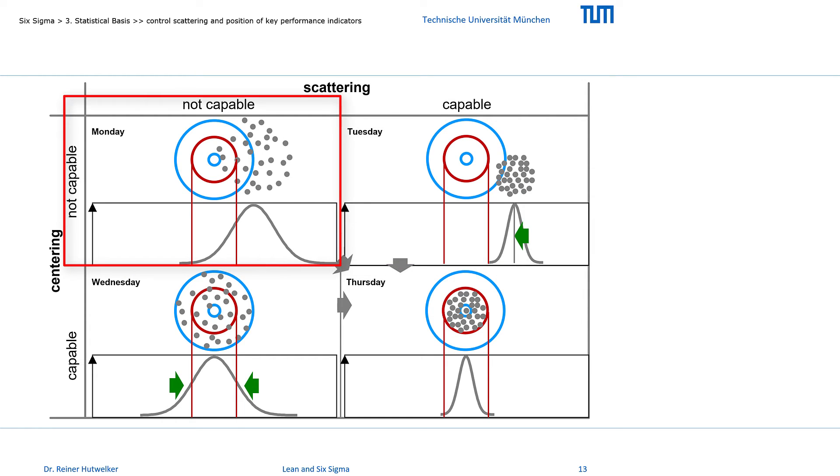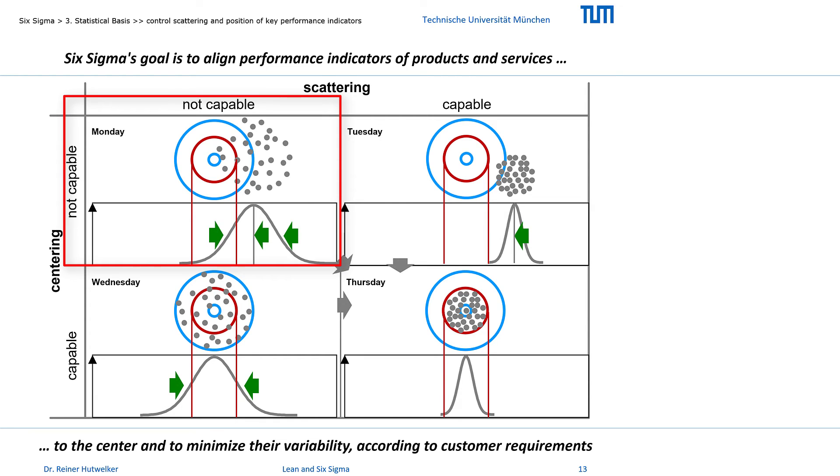Typically, we will have to deal with position shifts and scattering. And this is the challenging task in a Six Sigma project: centering the position and reducing the scatter. Nothing more, but nothing less.